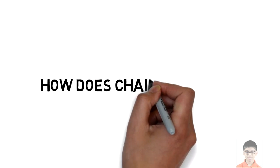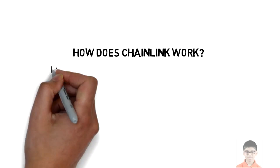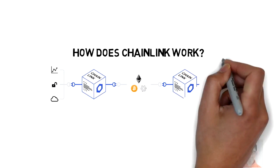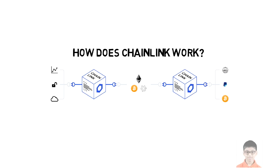Chainlink uses a network of nodes in an attempt to make the data provided to the smart contract as trustworthy and reliable as possible. When a smart contract requires real-world data, it puts out a request and the Chainlink protocol registers the event and forwards it to Chainlink nodes. What makes the process powerful is how Chainlink can validate data from multiple sources. Due to its internal reputation system, Chainlink can determine with relatively high accuracy which sources are trustworthy, greatly increasing the accuracy of results and protecting smart contracts from all sorts of attacks.